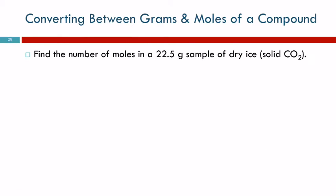How many moles in a 22.5 gram sample of dry ice? Dry ice is solid CO2. Well, we're given one number. We've got 22.5 grams. And it kind of matters grams of what? Grams of CO2. We want to find moles of CO2. Can we convert directly between grams and moles? Yes, we can. We can go grams to moles for compounds just like we did for elements.